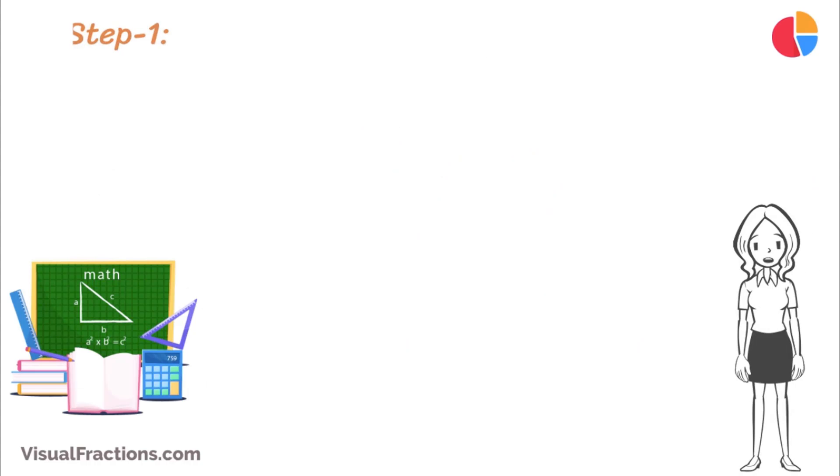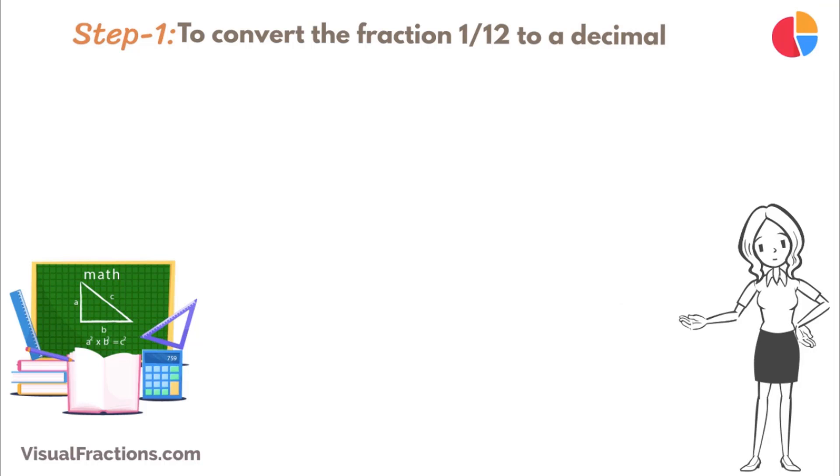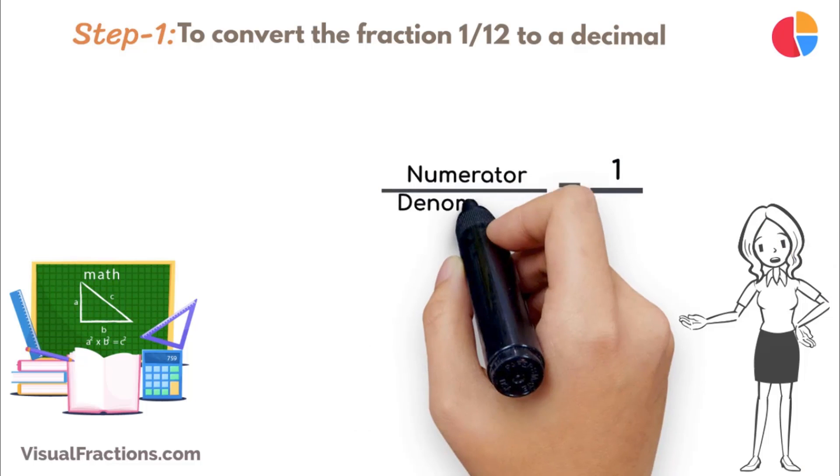The first step in converting the fraction 1/12 to a percent is to convert this fraction to a decimal. We do this by dividing the numerator, the top number, which is 1, by the denominator, the bottom number, which is 12.